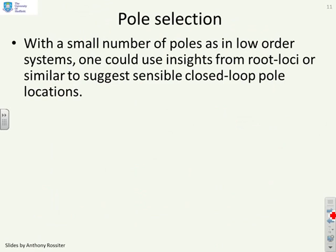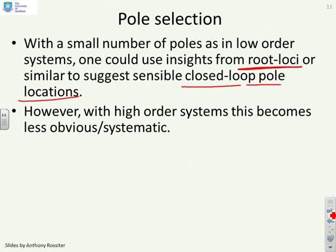So what's the summary? With a small number of poles, as in low order systems, maybe two states and three states, you could do something like a root loci design or similar to get an idea of where are sensible closed loop pole locations. However, with a high order system, this is less obvious and systematic.